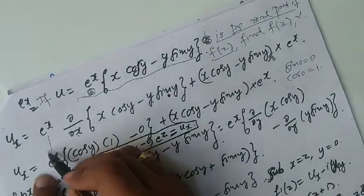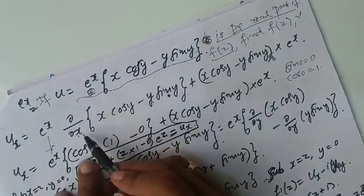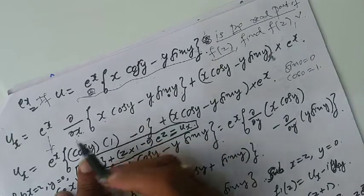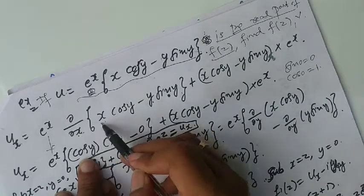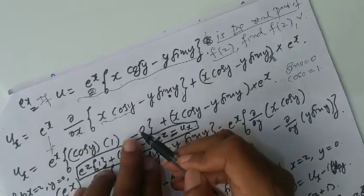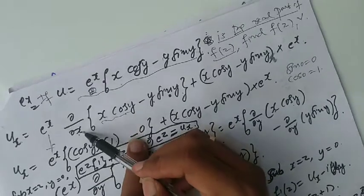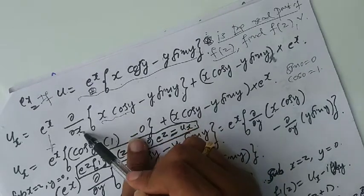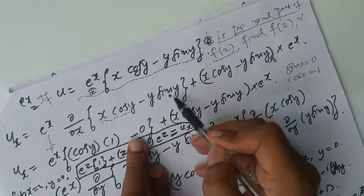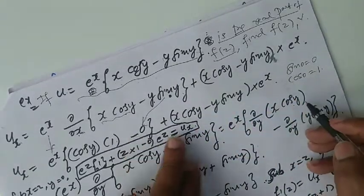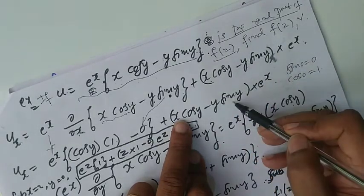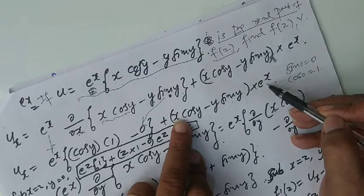So ux is equal to e to the power x times the derivative of (x cos y minus y sin y) with respect to x. With respect to x, cos y is constant — take it outside, differentiation of x is 1. And y sin y: both y terms are constant with respect to x, so differentiation is 0. Therefore ux = e to the power x into (cos y + 0) plus (x cos y minus y sin y) into e to the power x.